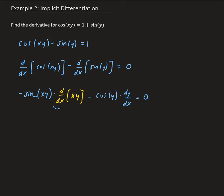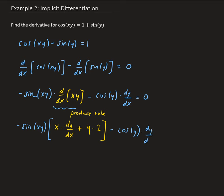From this point, we need to use the product rule on the d/dx of x times y. So we're going to have minus sine of xy times — taking x times the derivative of the second part, so we're going to have y prime, or dy/dx, plus y times the derivative of x with respect to x, which gives us 1. Then we have minus cosine y times dy/dx equals to 0.